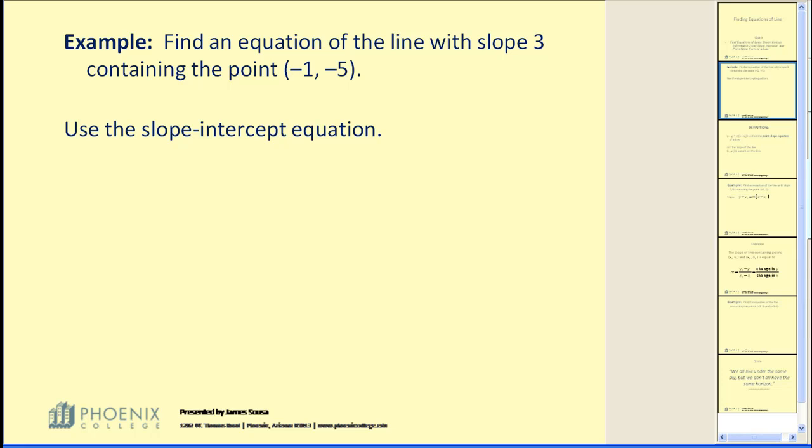Find an equation of a line with slope 3 containing the point (-1, -5). Use the slope-intercept equation.